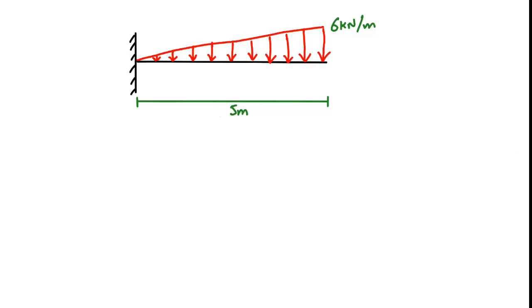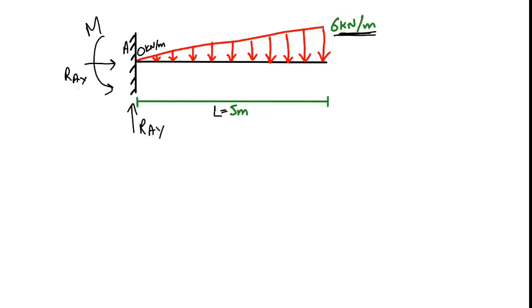This cantilever beam has a length of 5 meters and there is a uniformly varying load increasing from 0 kN/m up to 6 kN/m. Being a cantilever beam, it has a fixed support at A, which can resist horizontal load, vertical load R_ay, and moment M.